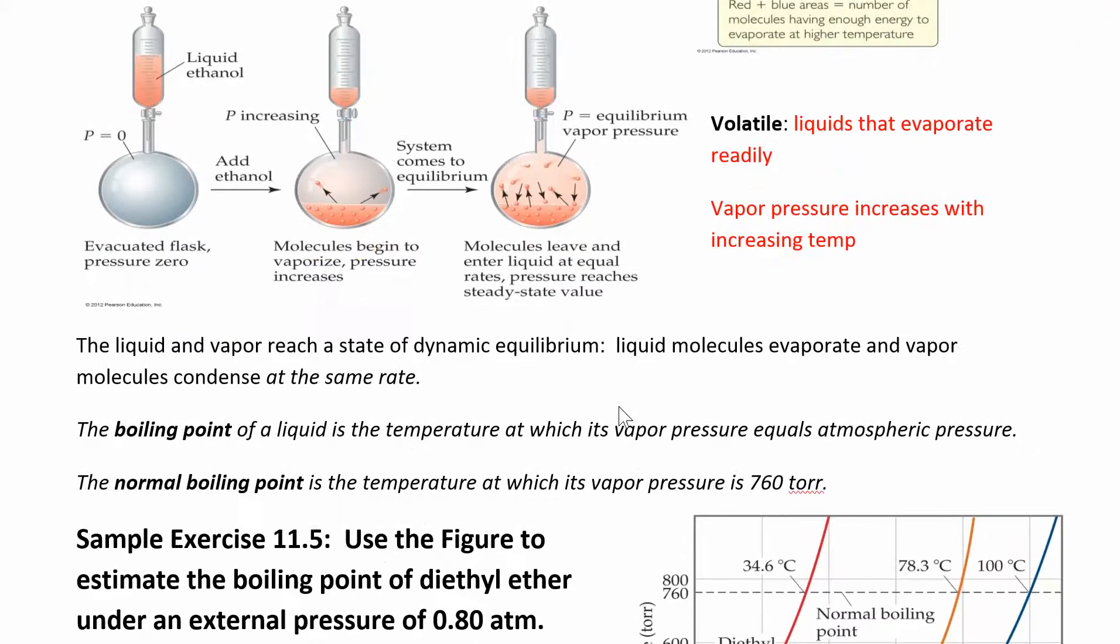So when do substances start to boil? Boiling happens, so the boiling point of a liquid happens when the vapor pressure equals the atmospheric pressure. So if you're boiling some water, and you have the lid on there, once the vapor pressure in there, so the amount of gas in the gas phase equals the amount in the atmosphere, equals the atmospheric pressure, then you're going to see that the water will start, the liquid will start to boil. And the normal boiling point, normal just means all of this is happening at 760 torr, or which again is 1 atm.